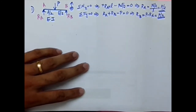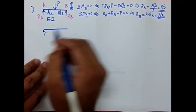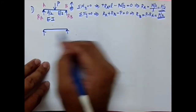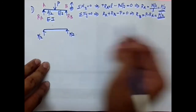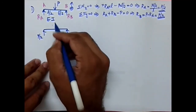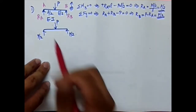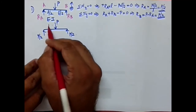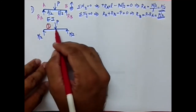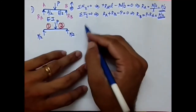Once we have the reactions — P/2 at A and P/2 at B with P applied at center — we can proceed. We divide the beam into segments based on point load locations. Here you have two segments, and now we write the expression for each segment.